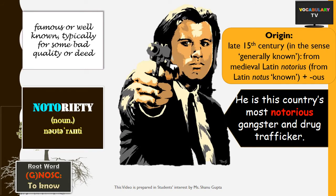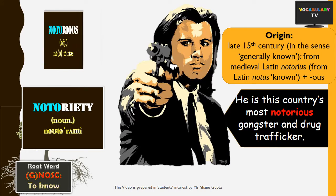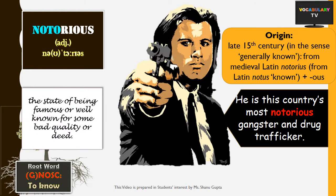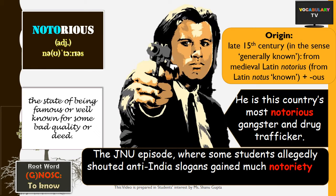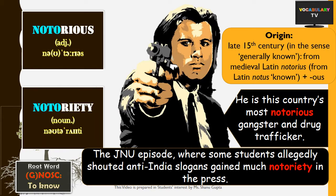To be notorious is to have 'notoriety', which is a noun meaning the state of being notorious or infamous. An example sentence: the JNU episode where some students allegedly shouted anti-India slogans gained much notoriety in the press. There are other words based on this root, like 'noble', meaning a well-known and aristocratic person, but let's move on to the word stem GNO.